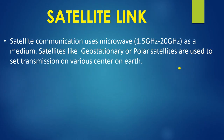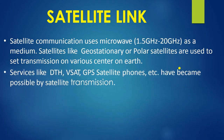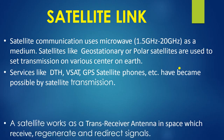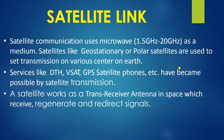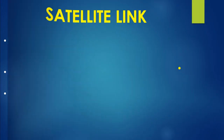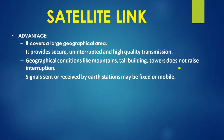Satellite communication uses microwave as a medium. Geostationary or polar satellites are used to set up transmission between various centers on earth. Services enabled by satellites include DTH, V-SAT, GPS, and satellite phones. Satellites also work as transceiver antennas in space, receiving, regenerating, and redirecting signals. These are the advantages and disadvantages of satellite communication.